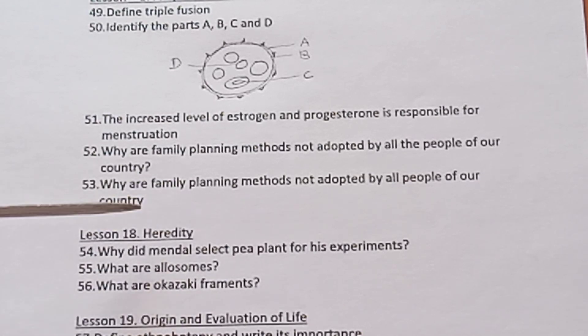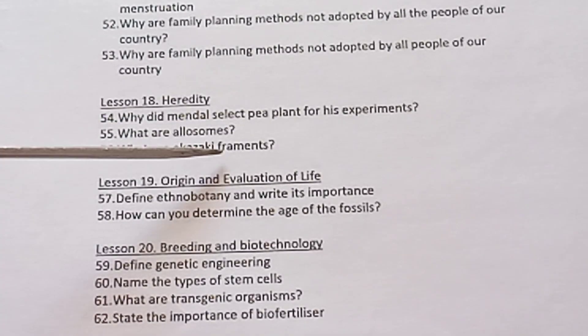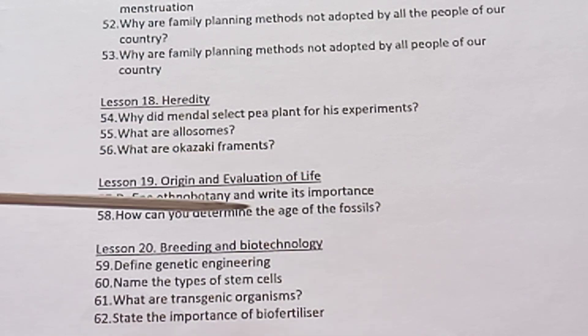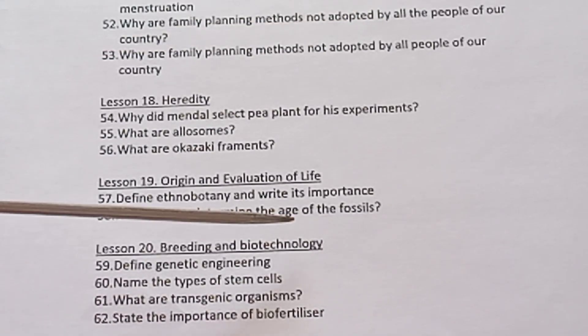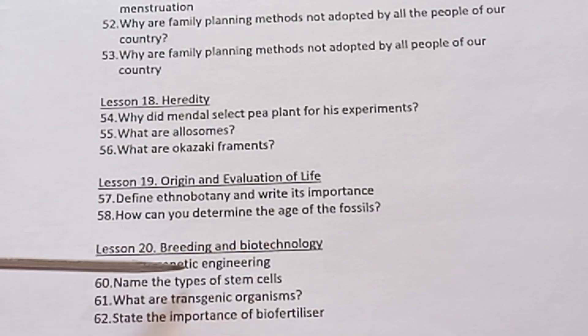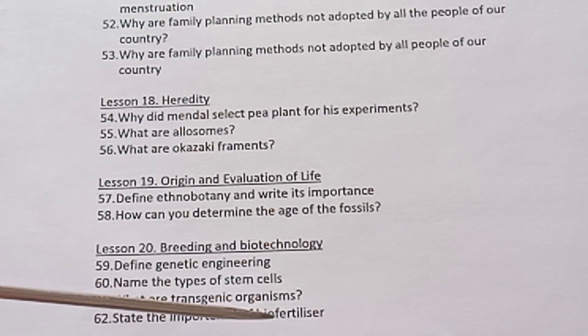Lesson 18 Heredity. Why did Mendel select pea plant for his experiment? What are allosomes? What are auxospores fragments? Lesson 19 Origin and Evolution of Life. Define ethnobotany and write its importance. How can you determine the age of the fossils? Lesson 20 Breeding and Biotechnology. Define genetic engineering. Name the types of stem cells. What are transgenic organisms? State the importance of biofertilizers.